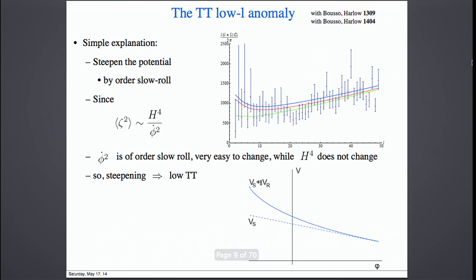There is a very simple mechanism to create this kind of change of power in the low-L power spectrum, which is steepening the potential of inflation by a small amount, by an order slow-roll parameter. This is because the 2-point function of scalar fluctuations goes like H to the 4 over phi-dot squared. Phi-dot is of order slow-roll, so if it changes the slow-roll parameter by order 1, you change this by order 1. By making the potential steep, this goes up and changes the potential a lot without basically changing Hubble.